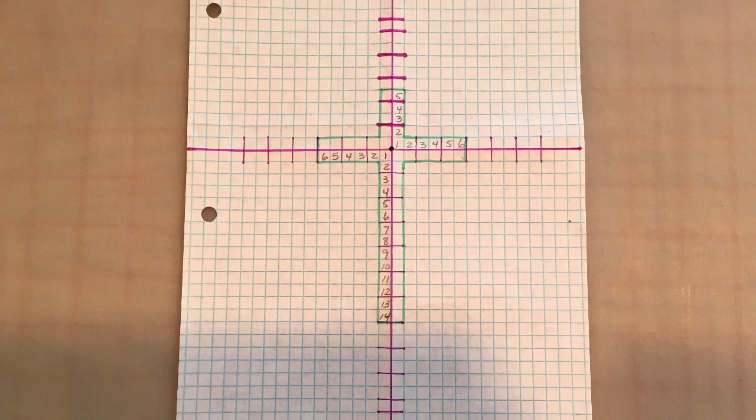And they can be any size, they're going to represent whatever size you want to make your quilt, but we're going to refer to them as two and a half inch little squares. So we're going to start from the top, from the center of the cross, we're going to go up one, two, three, four, five. From the center down, we're going to go one, two, three, four, five, six, seven, eight, nine, ten, eleven, twelve, thirteen, fourteen.